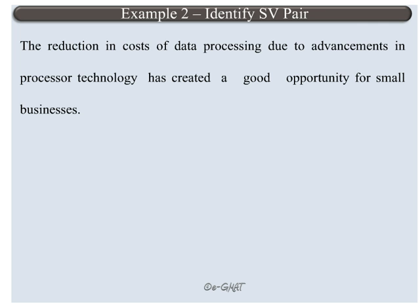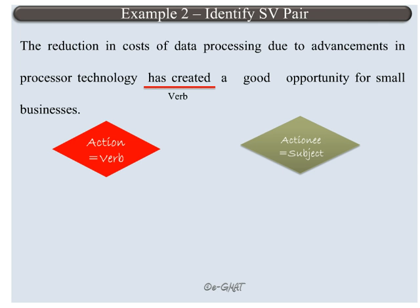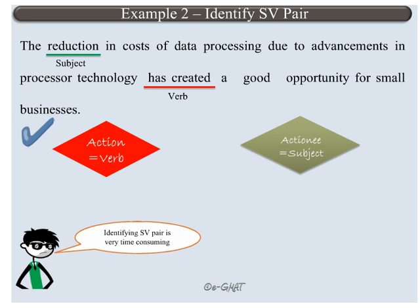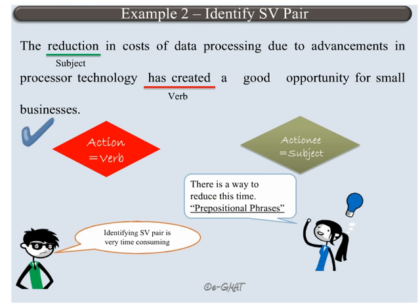For example two, read the sentence. For this sentence, what is the action? 'Has created.' Now find the subject: 'reduction.' This sentence also contains one clause and hence should have one subject-verb pair: 'reduction has created.' Thus, this sentence follows the subject-verb must exist rule. However, as you can notice, this is a rather long sentence and it takes too long to find the subject and the verb since we need to concentrate on each word. This time-consuming step can be reduced by identifying prepositional phrases.